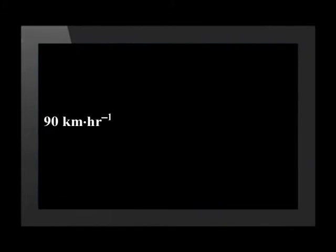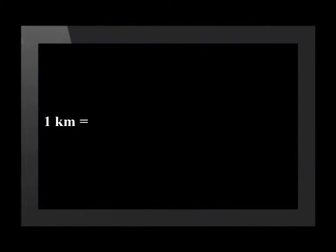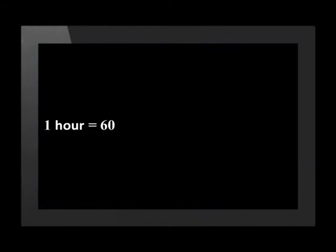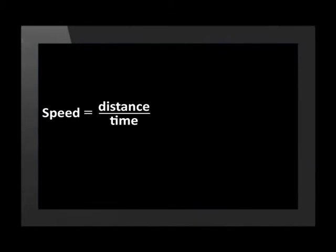Assume that a car is traveling at 90 kilometers per hour. We want to convert this to meters per second. First, we need to convert the kilometers to meters. A kilometer is equal to 1,000 meters. Therefore, we multiply by 1,000 and see that the car is traveling at 90,000 meters per hour. We know that one hour is equal to 60 minutes, and one minute has 60 seconds. Therefore, we calculate that there are 3,600 seconds in an hour. Since speed equals distance over time, the new speed in meters per second is 90,000 divided by 3,600, which equals 25 meters per second.